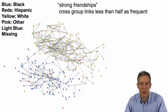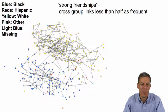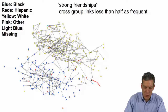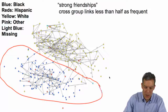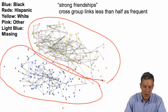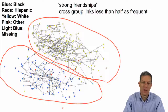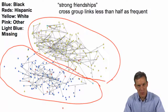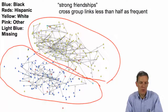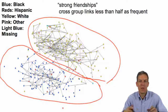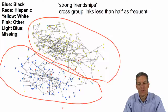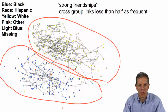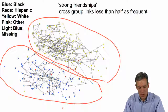Looking back at the Add Health data set, there is a strong split between one group of nodes and another, largely categorized by race. This would be a situation where you could imagine different behaviors being sustained even if people started out identically in preferences, but paid attention to who their friends were. Friends are correlated with race, and if people want to match the majority of their friends' behavior, you can end up with very different behaviors sustained by different groups within the same network.